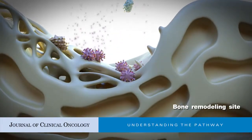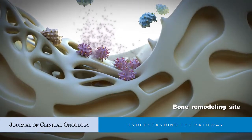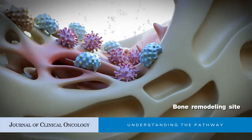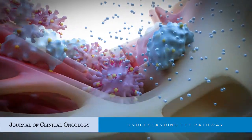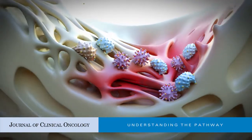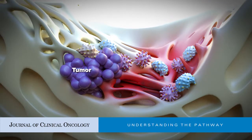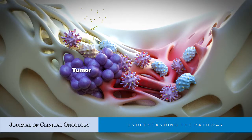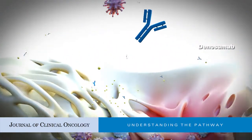Osteoclast precursors mature, fuse, adhere to bone, and release resorptive enzymes that form pits in bone. RANKL-expressing osteoblasts are recruited by osteoclasts to bone resorption sites, where they proliferate, differentiate, and release osteoid to form new bone matrix. In the setting of bone metastasis, a vicious cycle of bone destruction and tumor growth emerges as a consequence of tumor-induced dysregulation, with excess osteoclast activity serving as a key mediator of skeletal-related events in metastatic cancer.